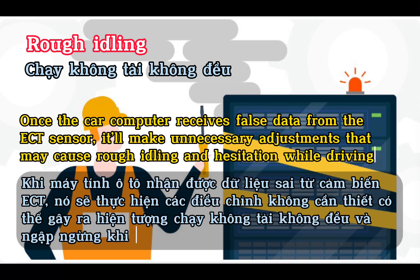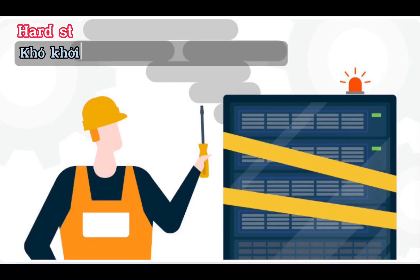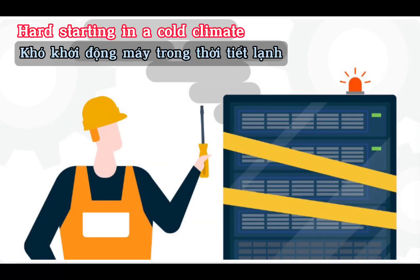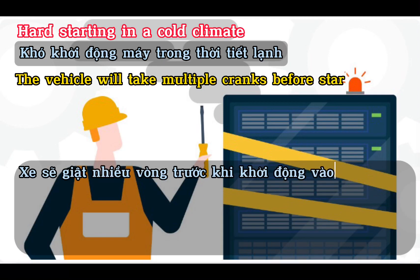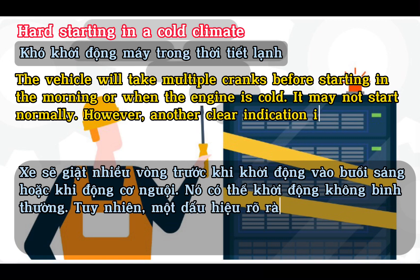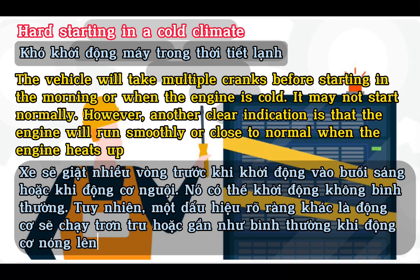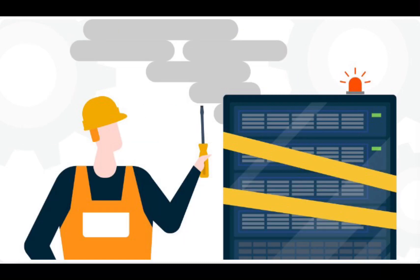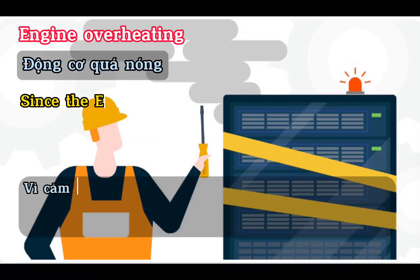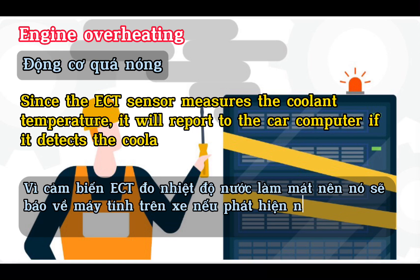Starting the engine when it is warm may cause the idle RPM to immediately jump to 1,200–3,000 RPM. Rough idling: once the car computer receives false data from the ECT sensor, it will make unnecessary adjustments that may cause rough idling and hesitation while driving. Hard starting in a cold climate: the vehicle will take multiple cranks before starting in the morning or when the engine is cold. However, the engine will run smoothly or close to normal once it heats up.